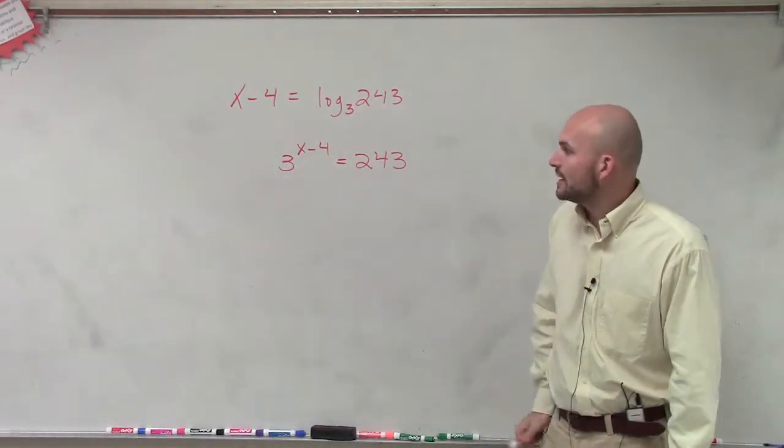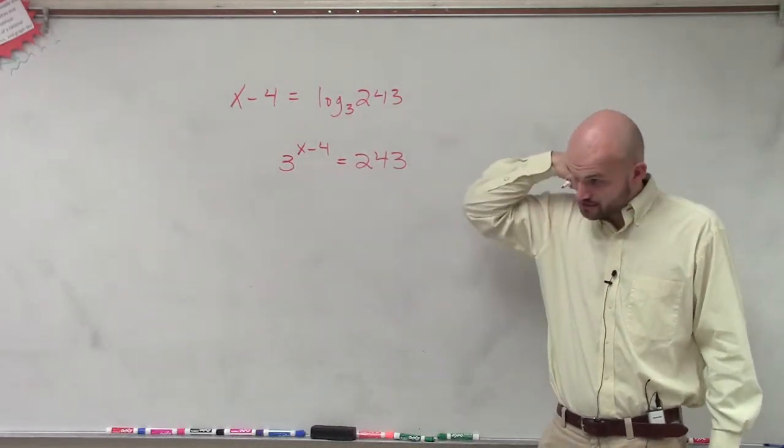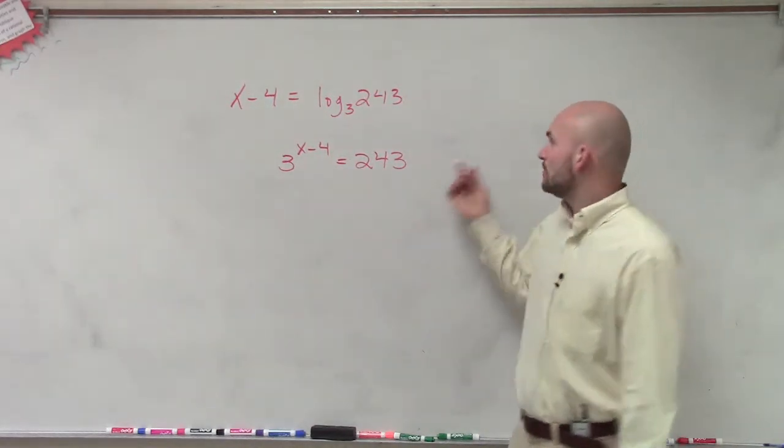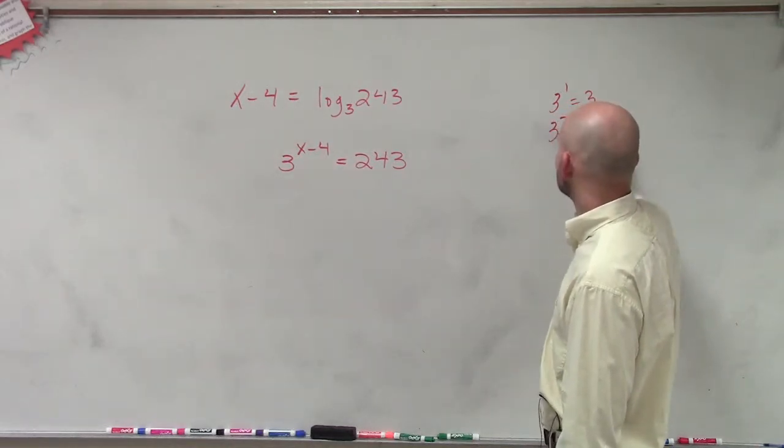So what I can do then is, can I rewrite 243 as a base 3? So as Jonathan is checking in his calculator, we know that 3 to the first power equals 3, 3 squared equals 9.